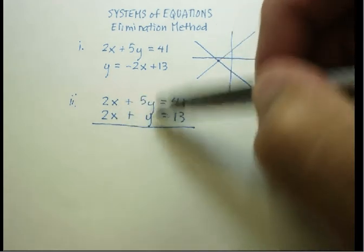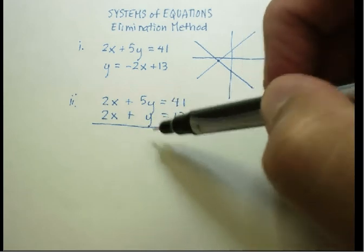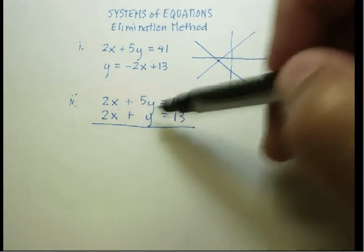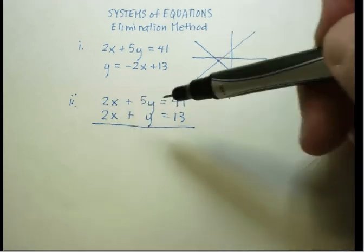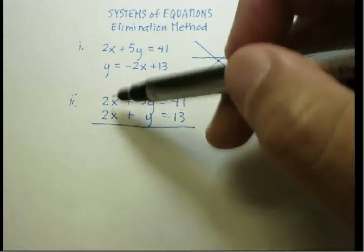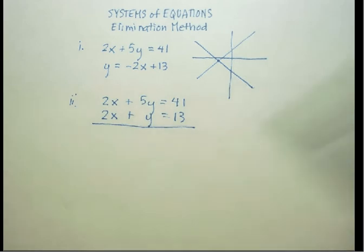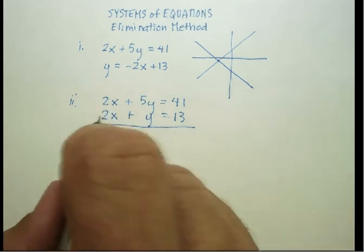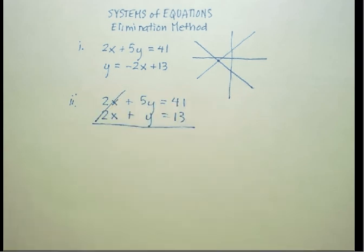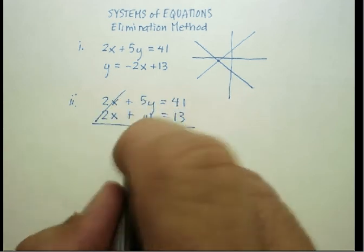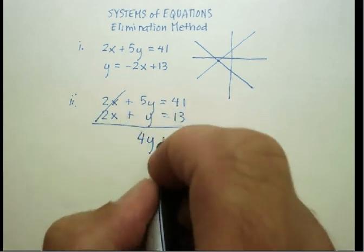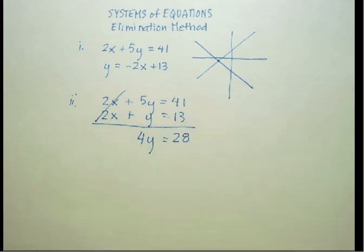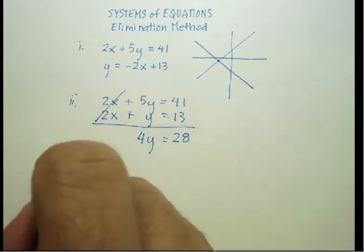Notice over here, if I were to subtract those, I would just get like 4y. That doesn't eliminate anything. So I want to get them into the point where I can either add or subtract the variables. In this case, like I said, I'm going to subtract this one from this one. That minus that eliminates the x. That minus that gives me 4y. That minus that gives me 28.